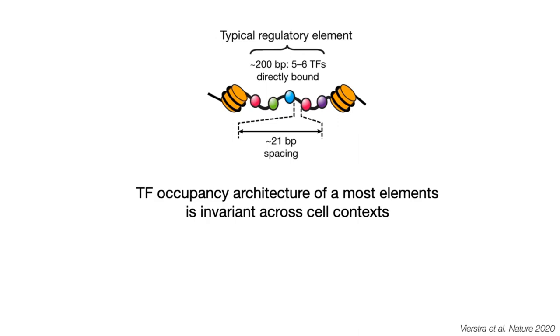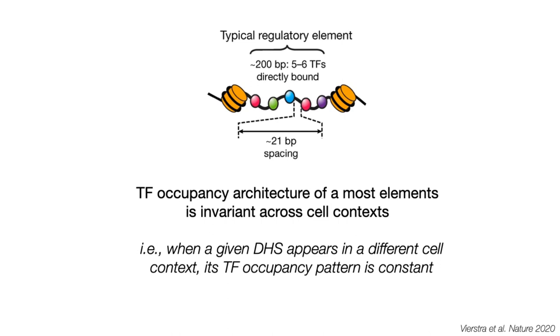One key finding is that this occupancy architecture at most elements is actually invariant across cell contexts. Essentially, it means that when a given DNase hypersensitive site appears in a given different cell context, its TF occupancy pattern appears to be constant.